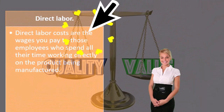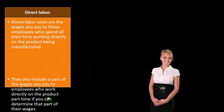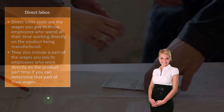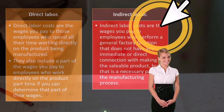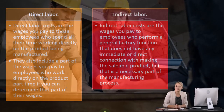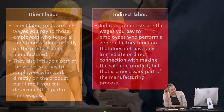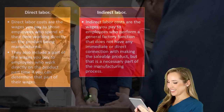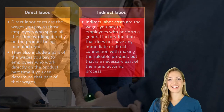Direct labor costs are the wages you pay to employees who spend all their time working directly on the product being manufactured. They also include a part of the wages paid to employees who work directly on the product part time, if you can determine that portion. Indirect labor costs are the wages you pay to employees who perform a general factory function — like maintenance of the factory itself. You can't allocate their cost to a specific unit of inventory, but their cost helps manufacturing in general, requiring some allocation method.